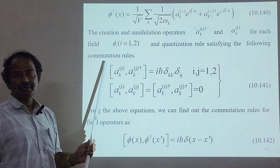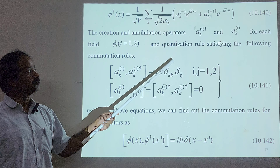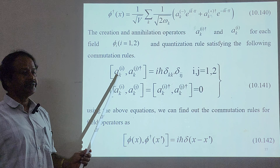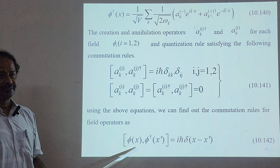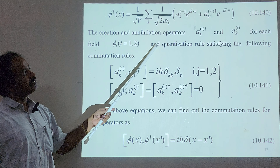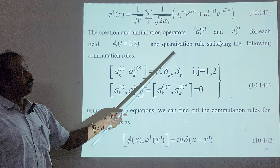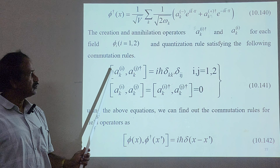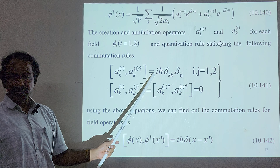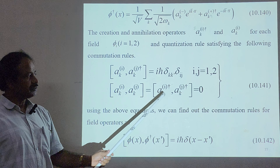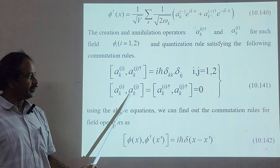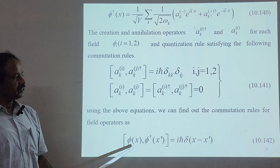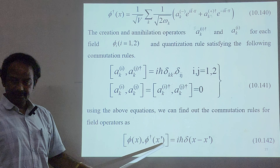These things are very important. When quantizing the field, we must substitute a quantization rule that obeys commutation relations between creation and annihilation operators as well as field operators. The creation and annihilation operators for each field phi₁ and phi₂ satisfy: [aki, akj†] = δij, and [aki, akj] = [aki†, akj†] = 0.